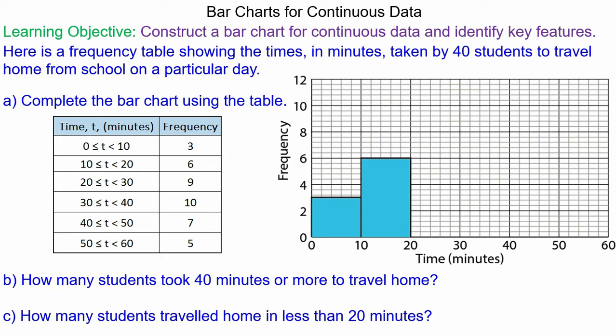So we will begin by plotting the bar between 20 to 30. Now this means it must be less than 30 but greater than or equal to 20 and it has a height of 9, a frequency of 9.